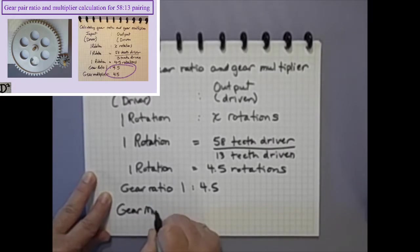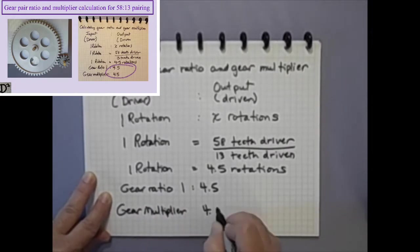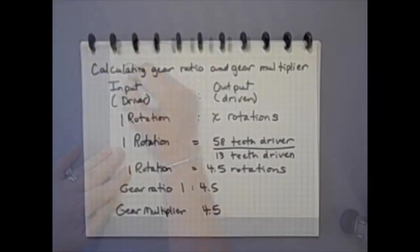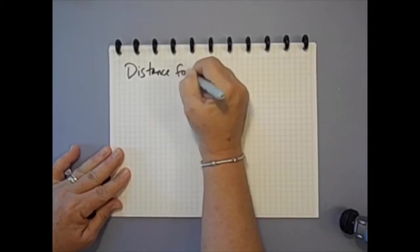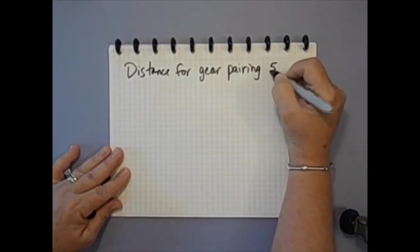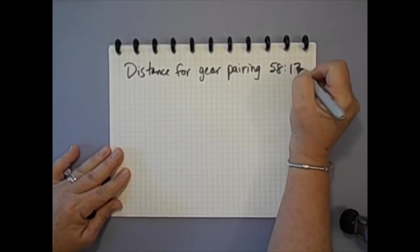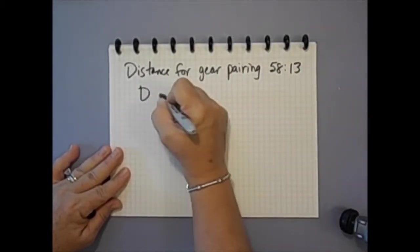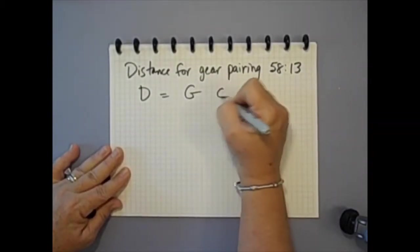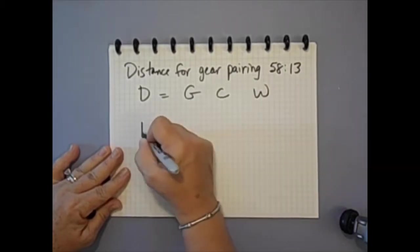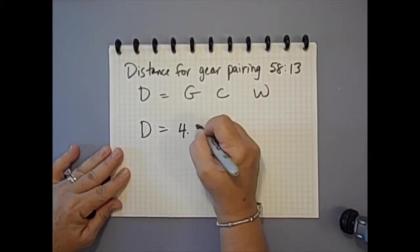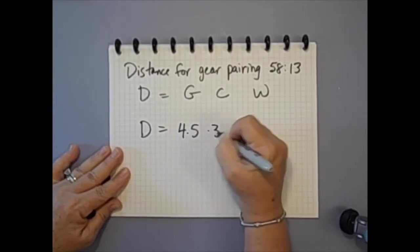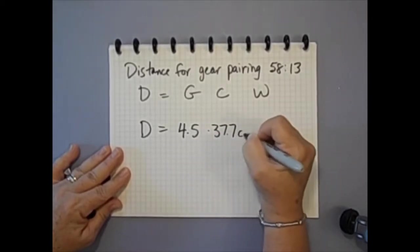How far will a mousetrap car with this gearing CD wheels and 10 string wraps travel? Let's do the math. D equals GCW, so D equals G 4.5 times C 37.7 centimeters times W 10 string wraps and that equals 1696.5 centimeters, which is more than 700 centimeters farther than the 38 to 13 pairing.